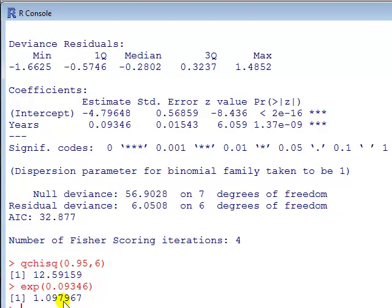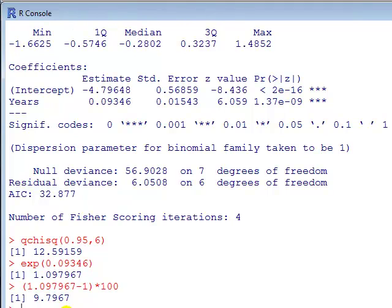For those of you a bit rusty about converting this into percentage, one way to do this is to type in the value, get hold of the value, subtract 1, multiply by 100. That's now a percent, 9.8% increase in the odds.